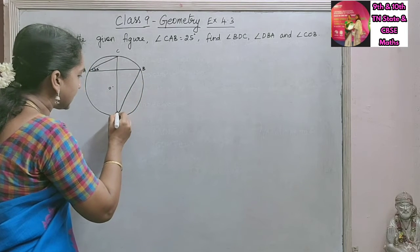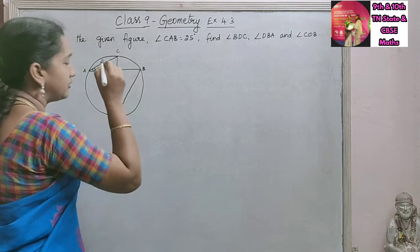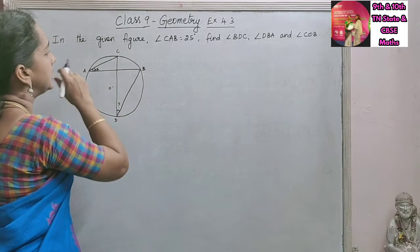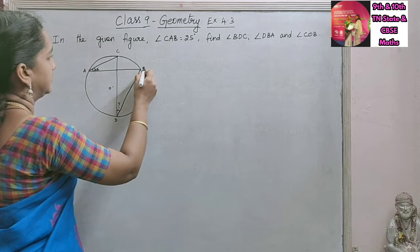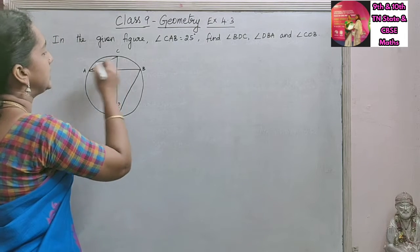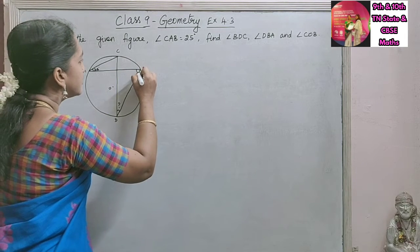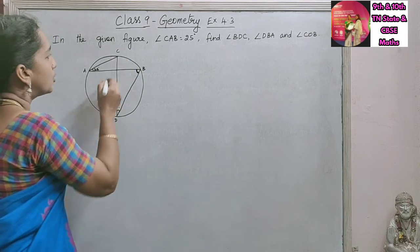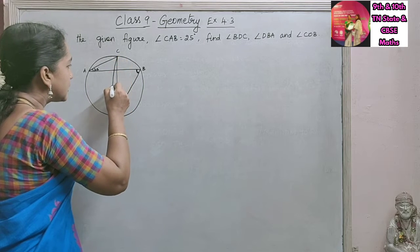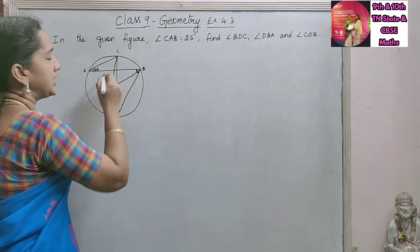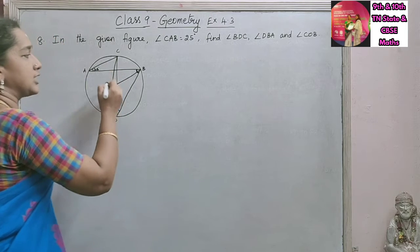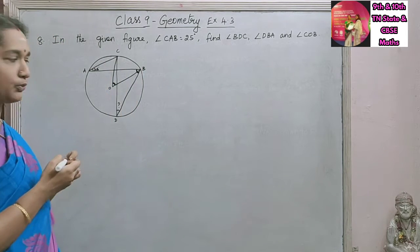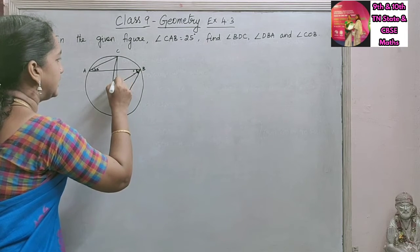When we join this we will get an angle here, and this angle we are asked to find. Then angle DBA — this angle we need to find. Then angle COB. O is the center, and if we connect this, this is the radius. So this angle we are asked to find. So these are the three angles we are asked to find.